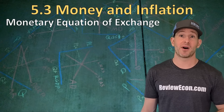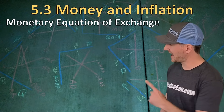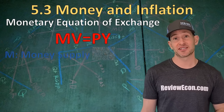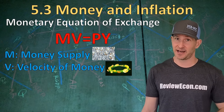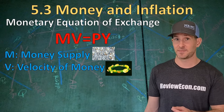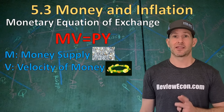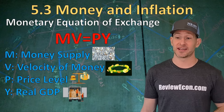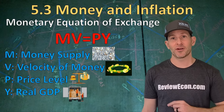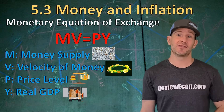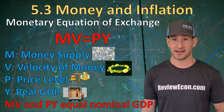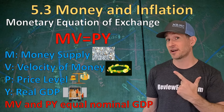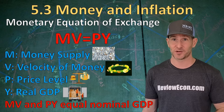The other thing we need to know for this topic is the monetary equation of exchange. The equation is MV equals PY. M is the money supply, V is the velocity of money — how many times a dollar gets spent on average per year. P is the price level, and Y is real income, also known as real output or real GDP. The important thing to know is that both sides of this equation equal nominal GDP. The money supply times the velocity of money equals nominal GDP, and the price level times the quantity of real output also equals nominal GDP.